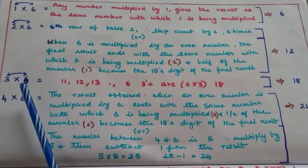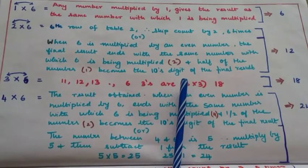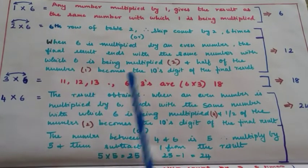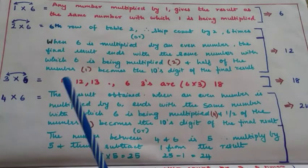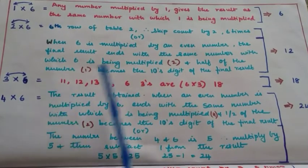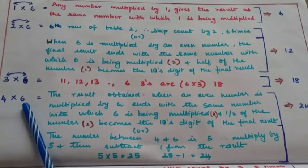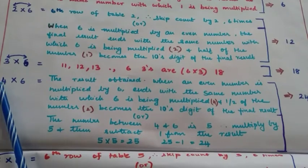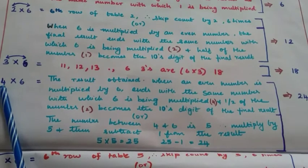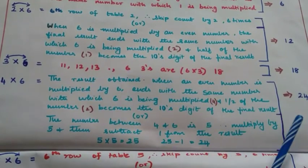For row 3, where 3 is multiplied by 6, use the rhyming sentence from table 3: "11, 12, 13 — 6 threes are 18." Repeating this sentence 3 to 4 times, kids will never forget 3 into 6 is 18. For row 4, since 4 is even and multiplied by 6, the result ends with 4 and half of 4 becomes the tens digit — therefore 4 into 6 is 24.